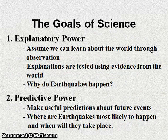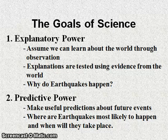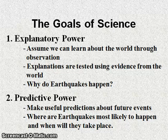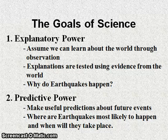Goals of science. There are two main goals: explanatory power and predictive power. Under explanatory power, we assume we can learn about the world through observation, and our explanations are tested using evidence from the natural world — for example, explaining why earthquakes happen. Under predictive power, we make useful predictions about future events, such as where earthquakes are most likely to happen and when they will take place.